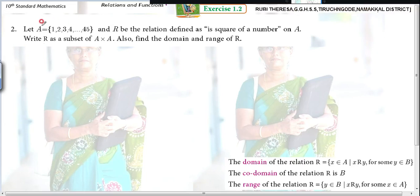Let A equal to {1, 2, 3, 4, 5, etc. up to 45}. So how many elements does it have? There are 45 elements.